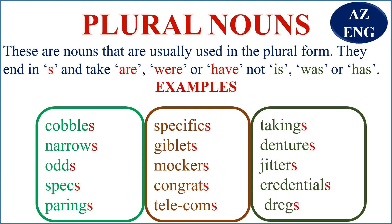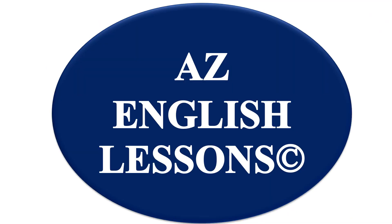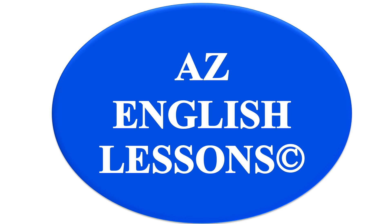Wow, absolutely great! You remember — you say, for example, 'the cobbles are', not 'the cobbles is'. Past tense: 'the cobbles were', not 'the cobbles was'. 'The cobbles have', not 'the cobbles has'. Why? It is a plural noun. That's it for now. Thanks. Until next time.